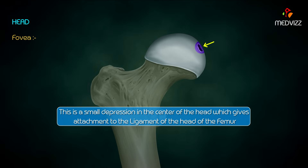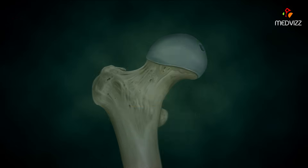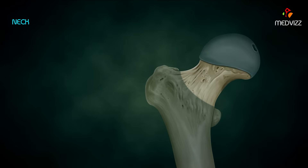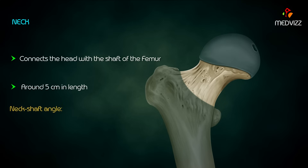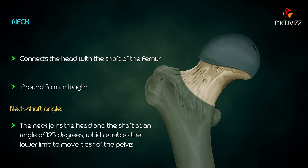The fovea is a small depression in the center of the head which gives attachment to the ligament of the head of the femur, and is intracapsular. The neck connects the head with the shaft of the femur and is about five centimeters in length.